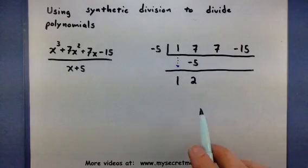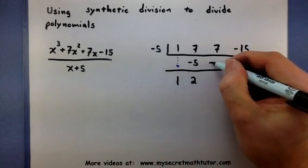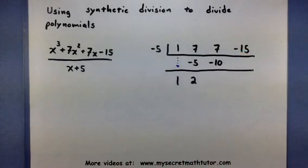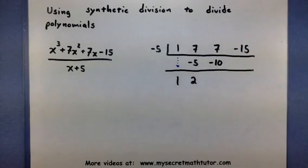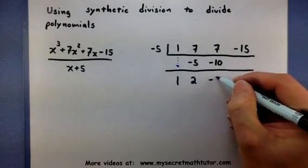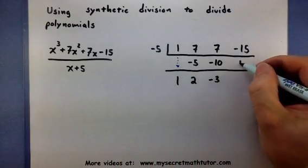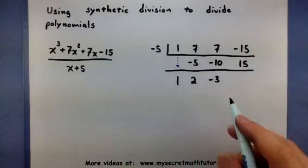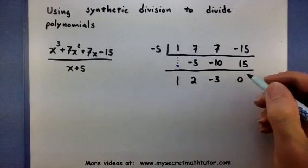Good. And again, once we build these ones, multiply by that negative 5. There we go. So, I've written it into the next column. I add the 2. So, negative 3. And I multiply. Finally, adding the negative 15 and the positive 15, I get 0.